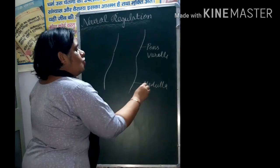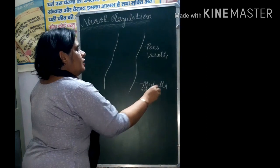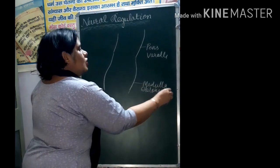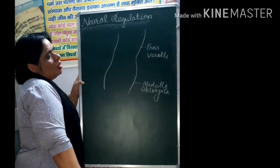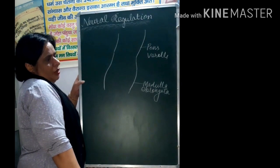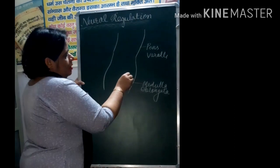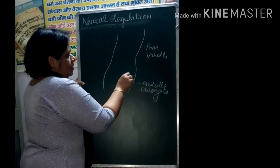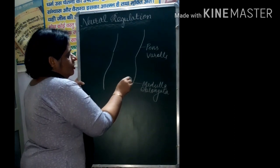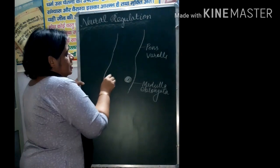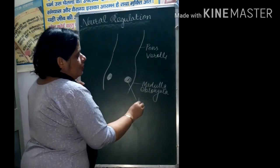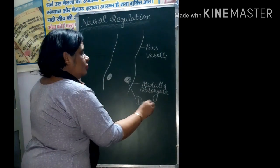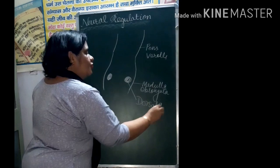Medulla Oblongata and you know that Medulla Oblongata which is called Dorsal Group of Neuron. This is called Dorsal Group of Neuron.